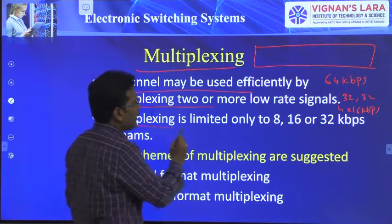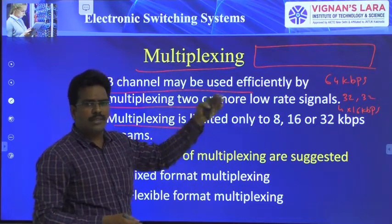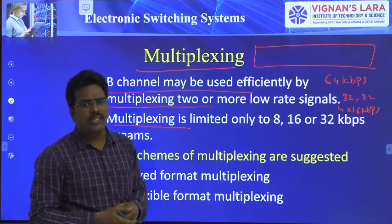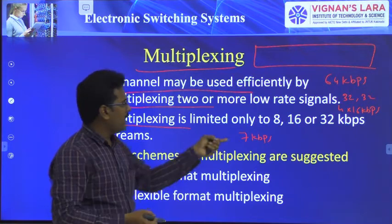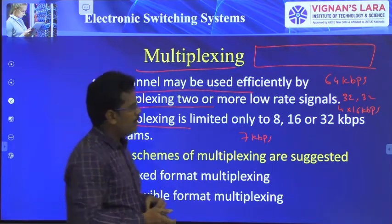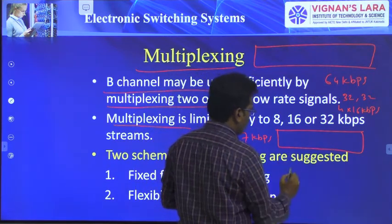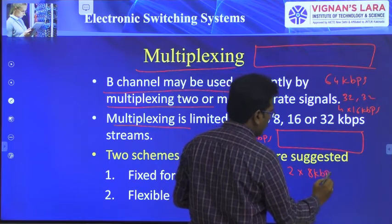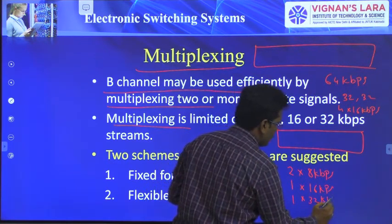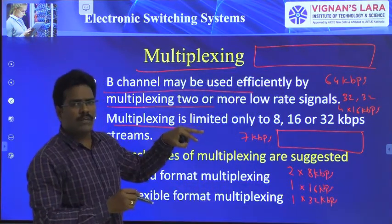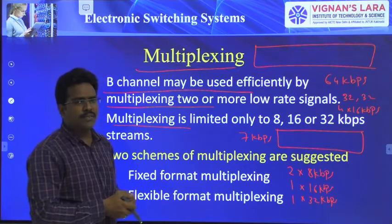Multiplexing is limited to 8, 16, 32, and 64 kbps channel rates. You cannot transmit signals at other rates directly — for example, a 7 kbps signal must first be rate adapted to 8 kbps, then transmitted. For example, in a 64 kbps channel, I can transmit two 8 kbps signals, one 16 kbps signal, and one 32 kbps signal — that uses the full 64 kbps. This is called multiplexing: transmitting two or more low-rate signals on a given 64 kbps channel.